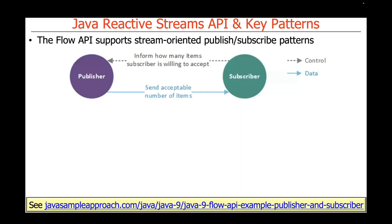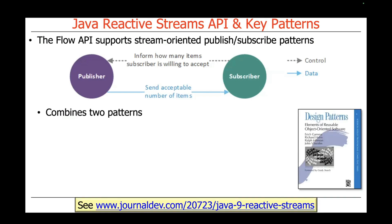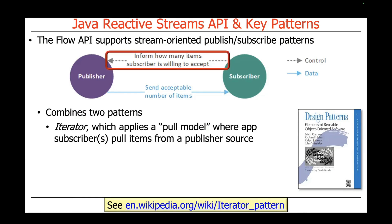The Flow API supports various patterns that work in a stream environment — publish-subscribe patterns. We have a publisher which is informed by a subscriber about how many items the subscriber is willing to accept, and then the publisher sends that acceptable number of items to the subscriber or subscribers. Two primary patterns are implemented here, both seen in the Gang of Four book: one is the iterator pattern, where the subscriber informs the publisher how much data it can consume in a tranche or chunk.